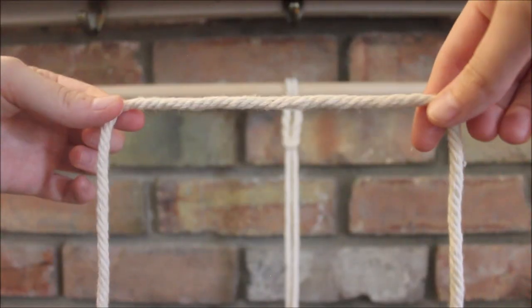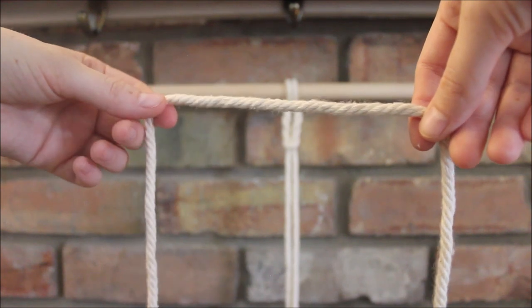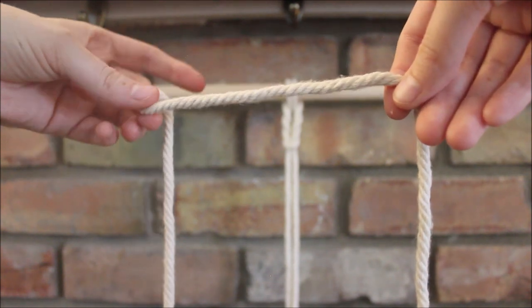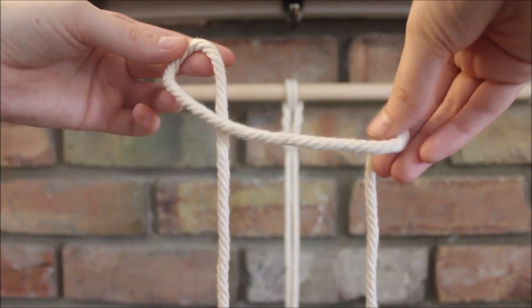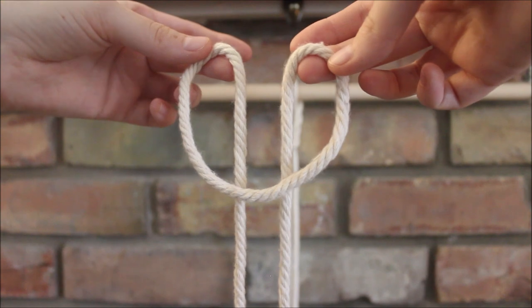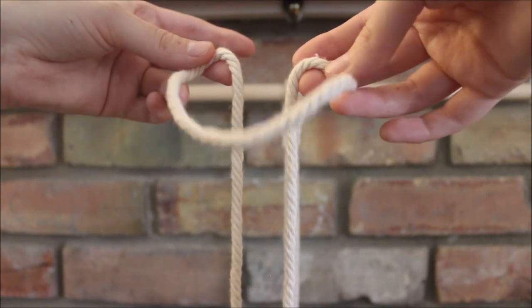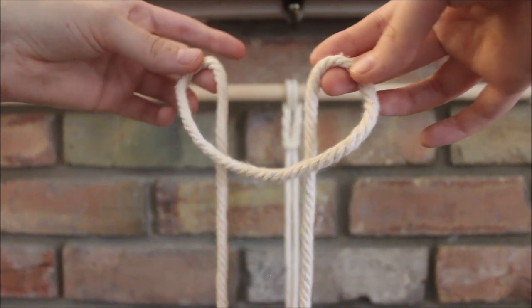We're going to take our rope and fold it in half, and then what we're going to do is we're going to take and twist it so that we have a loop, and we're going to do the same thing on the other side. So you just take it and kind of twist it around so you have two loops behind this string that hangs kind of horizontally.